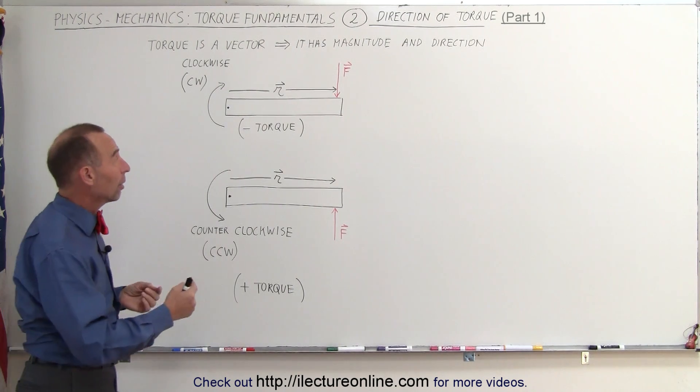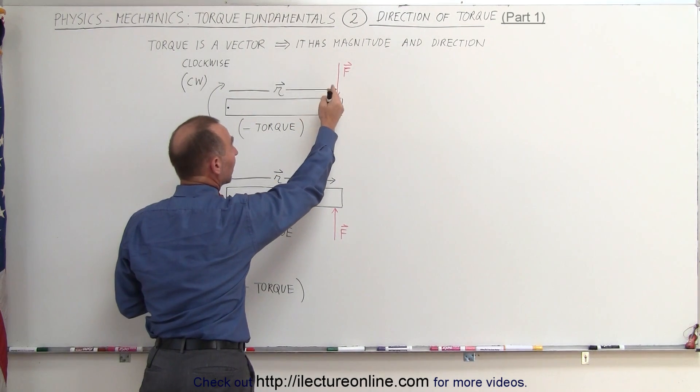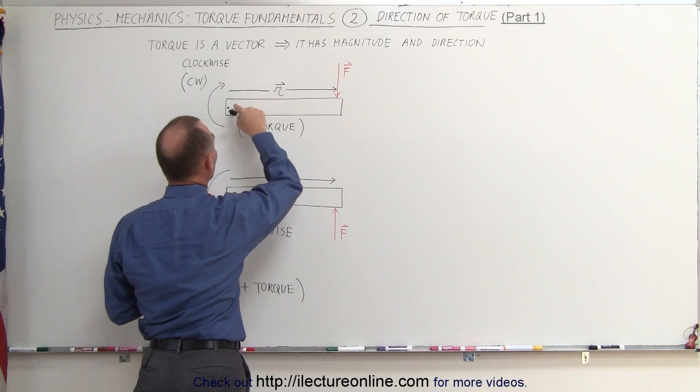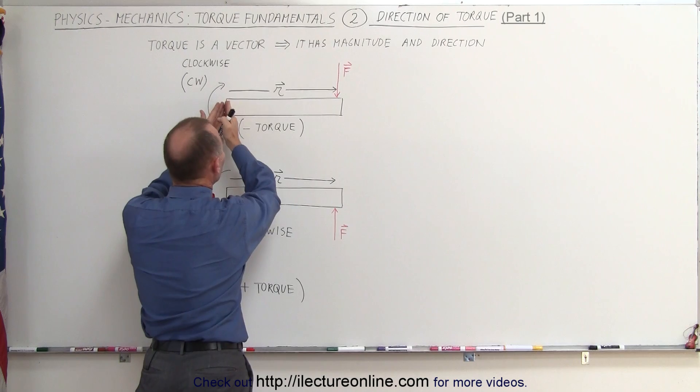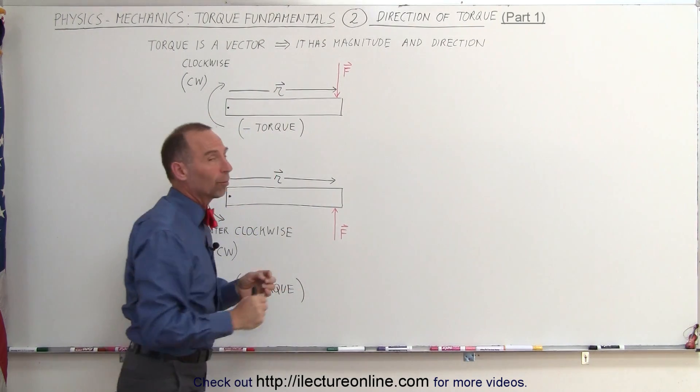The torque is the product of a force applied to an object at a point, not directly where the point of rotation is, and the distance from the point of rotation to where the force is applied.